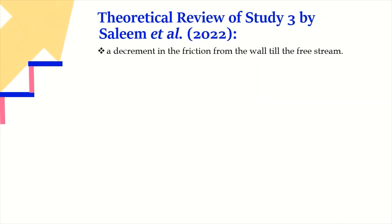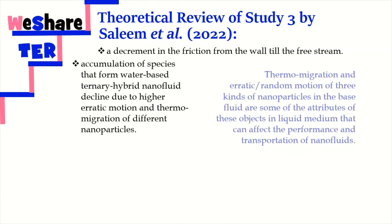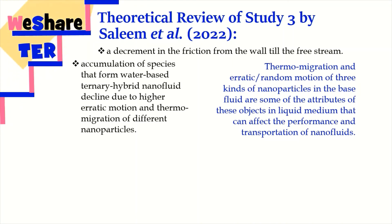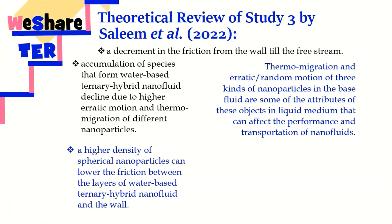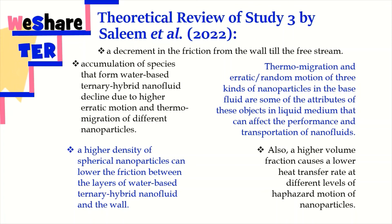There is a decrement in friction from the wall till the free stream. Accumulation of species that form water-based ternary hybrid nanofluid declines due to higher erratic motion and thermomigration of different nanoparticles. Thermomigration and erratic random motion of three kinds of nanoparticles in the base fluid are attributes that can affect the performance and transportation of nanofluids. A higher density of spherical nanoparticles can lower the friction between the layers of water-based ternary hybrid nanofluid and the wall. Also, a higher volume fraction causes a lower heat transfer rate due to different levels of haphazard motion of nanoparticles.